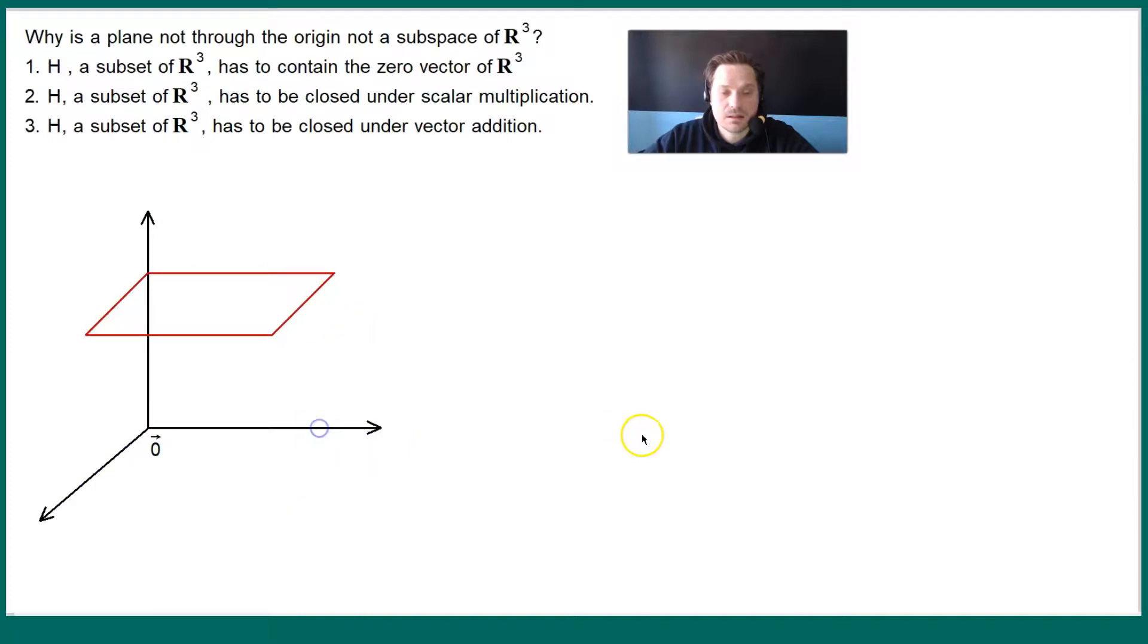Okay, next. Take a look. Next condition we want to check is, it has to be closed under scalar multiplication. Is that true? Well, take a look. Take a vector, say, from the origin here, and draw it as a vector to that point on the plane. The issue is the following.